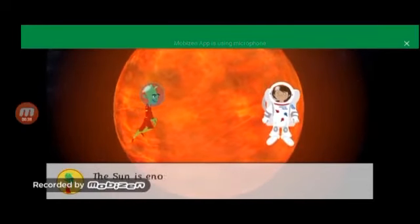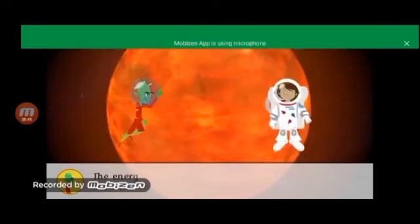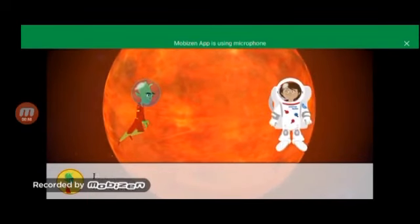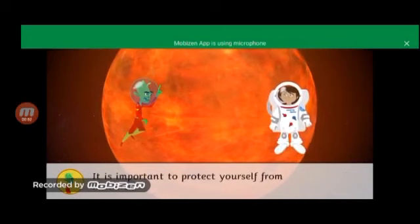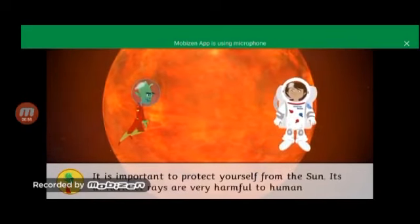The Sun is enormous. Its diameter is 109 times bigger than the Earth. The energy that the Sun gives off is necessary for life on Earth. It is important to protect yourself from the Sun. Its ultraviolet rays are very harmful to human skin.